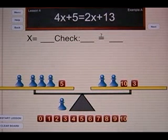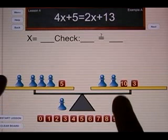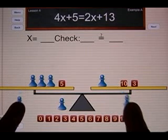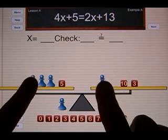We learned in lesson number 3 that we can do legal moves by removing a pawn from each side. So let's do that. I can remove one pawn from each side. I can do that again.